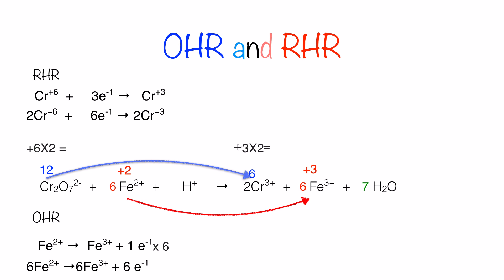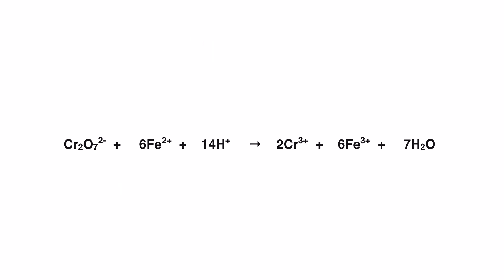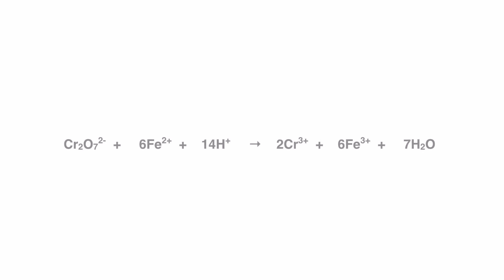Next, we balance the hydrogen atoms. We have seven water molecules, giving 7×2 = 14 hydrogen atoms on the product side, so we need 14 hydrogen ions on the reactant side — the coefficient of H⁺ becomes 14. Now Fe is balanced (6 on each side), oxygen is balanced (7 on each side), and hydrogen is balanced (14 on each side), so the equation is completely balanced. That's it for now — if you like the video, please don't forget to rate, comment, and subscribe. Thank you and have a great day.